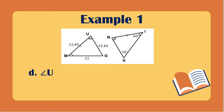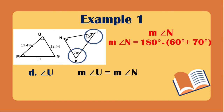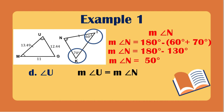For letter D, we find angle U. The measurement of angle U equals the measurement of angle N, but we don't have a value for angle N, so we need to solve it. The measurement of angle N equals 180 degrees minus the sum of the two known angles, which are 60 degrees and 70 degrees — that is 130 degrees. So the measurement of angle N is 50 degrees. Therefore, the measurement of angle U is also 50 degrees.